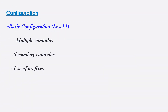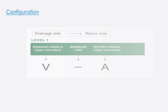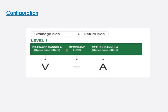At configuration level one, features include multiple cannulas, secondary cannulas, and use of prefixes. Cannulas contributing to major flow — such as drainage or return — are written in uppercase. For example, in VA ECMO, V is the drainage cannula in the venous side written in uppercase, the dash represents the position of the membrane, and A represents arterial, also written in uppercase.